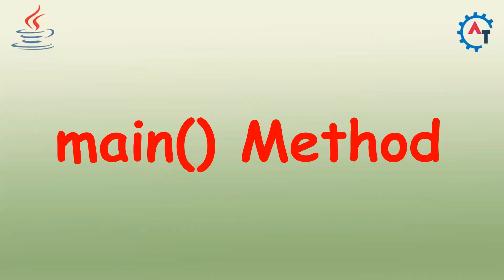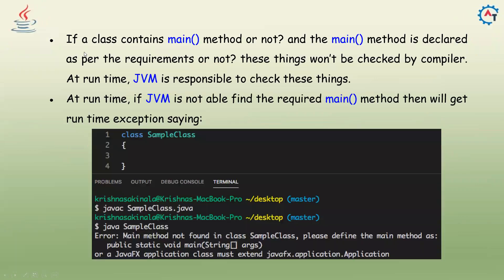In this video we will see the main method in Java. Whether a class contains a main method or not, and whether the main method is declared as per the requirements or not — these things won't be checked by the compiler. At runtime, the JVM is responsible to check these things. If the JVM is not able to find the required main method, we'll get a runtime exception.